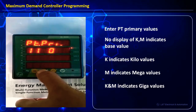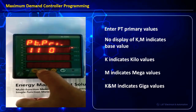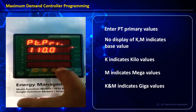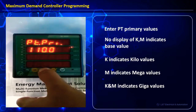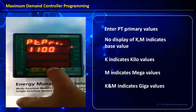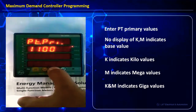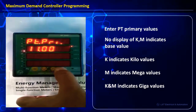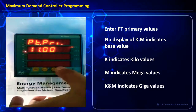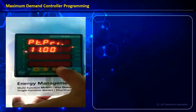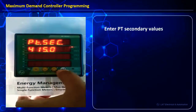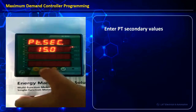Always remember that towards the end we will have to select the decimal in such a manner that it shows 11.00 with the K indicator on. Next we move to PT secondary, where we will change this from 415 to 110.